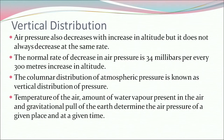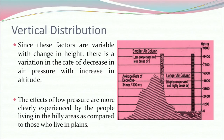Now let's understand the vertical distribution of air pressure. Air pressure decreases with increase in altitude but it does not always decrease at the same rate. The normal rate of decrease in air pressure is 34 millibars per every 300 meters increase in altitude. The columnar distribution of atmospheric pressure is known as vertical distribution of pressure. Temperature of the air, amount of water vapor present in the air, and gravitational pull of the earth determine the air pressure of a given place at a given time. Since these factors are variable with change in height, there is variation in the rate of decrease in air pressure with increase in altitude. The effects of low pressure are more clearly experienced by people living in hilly areas compared to those who live in plains.